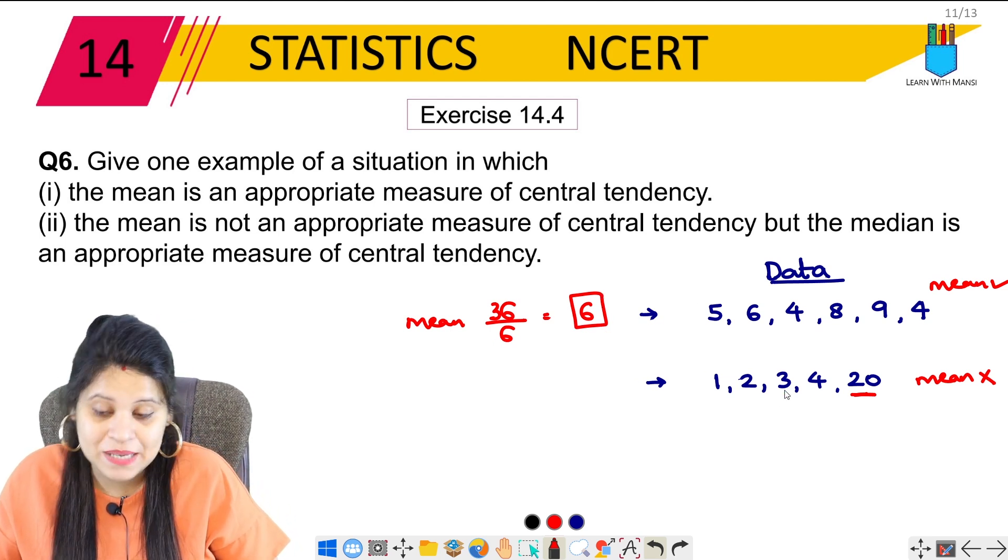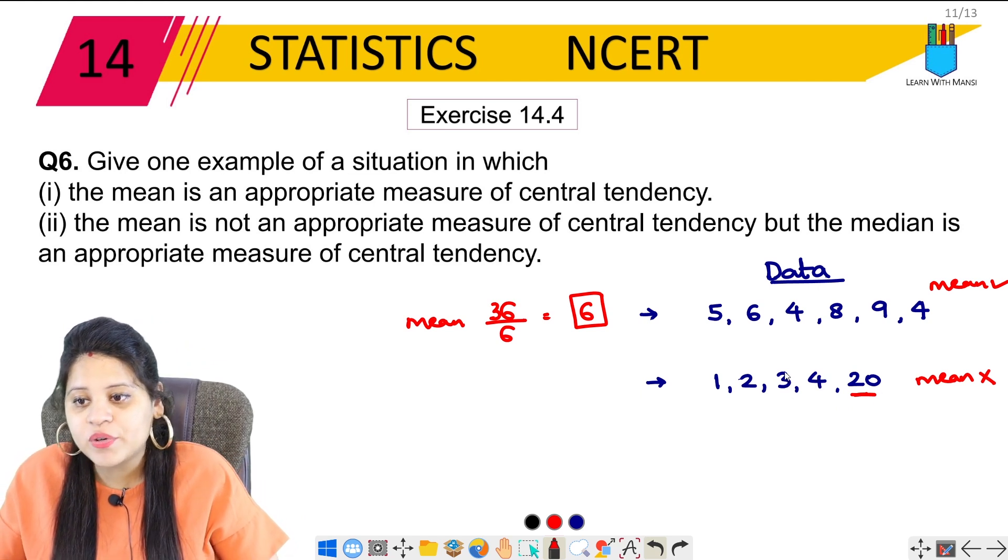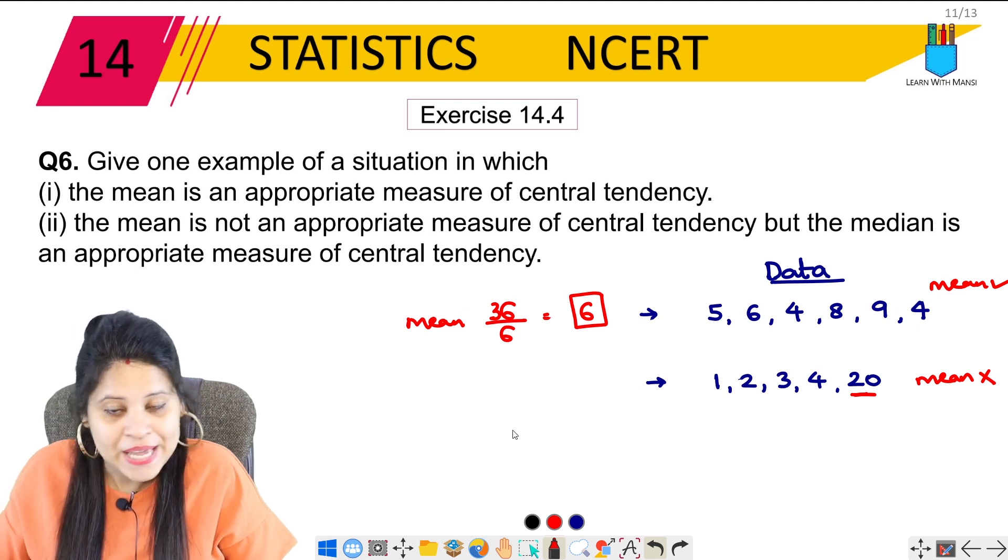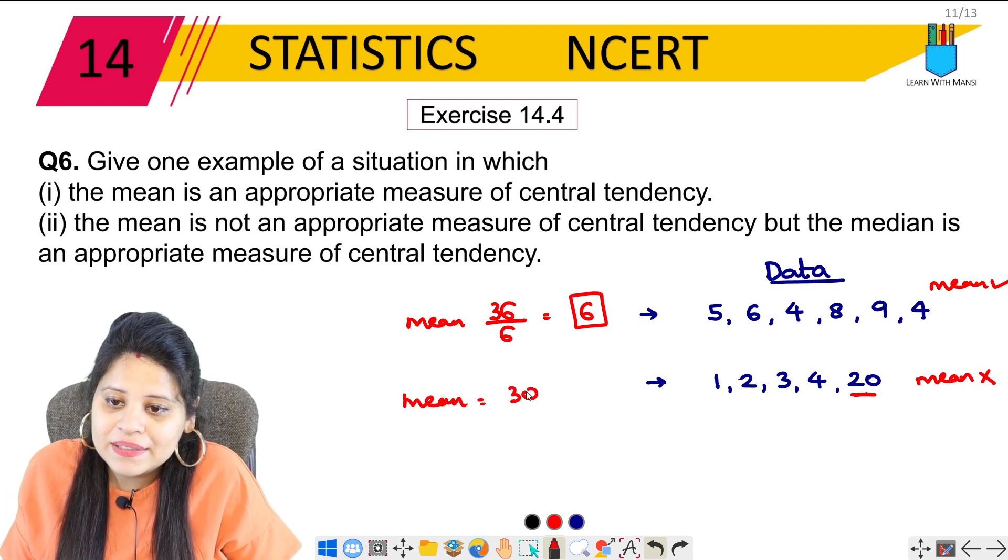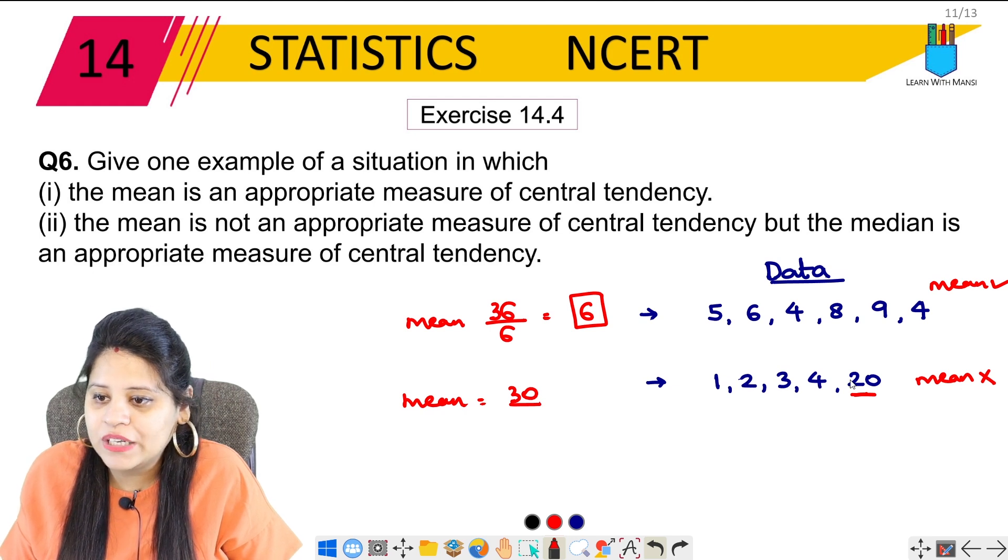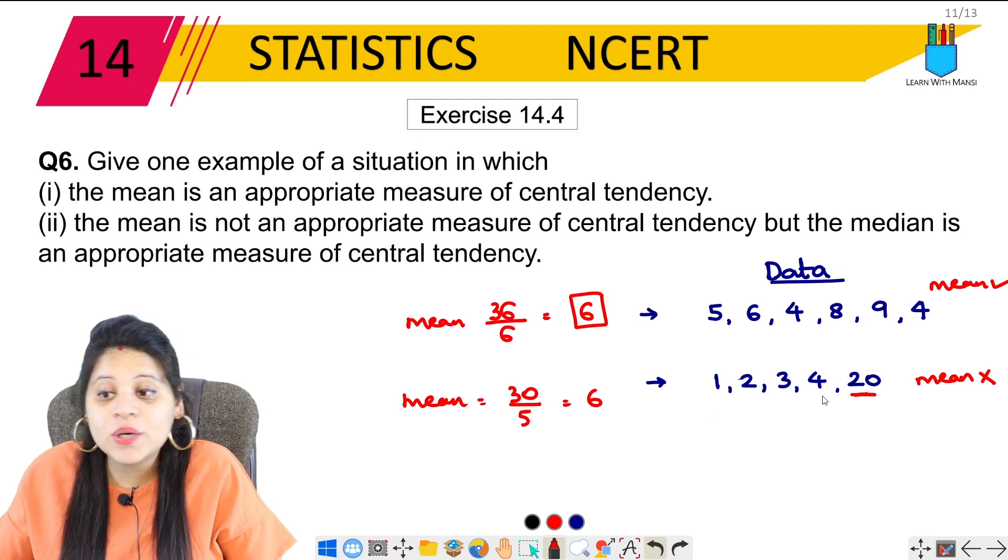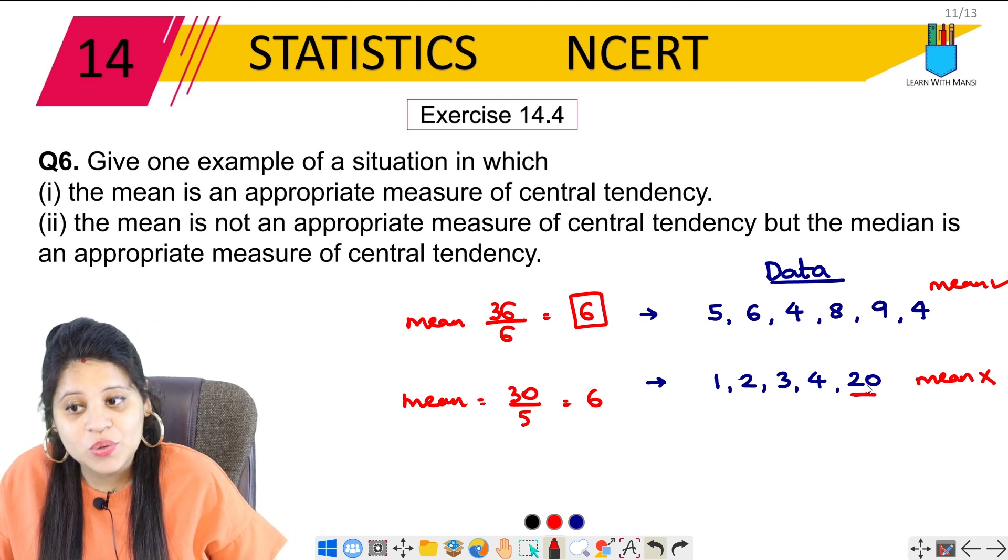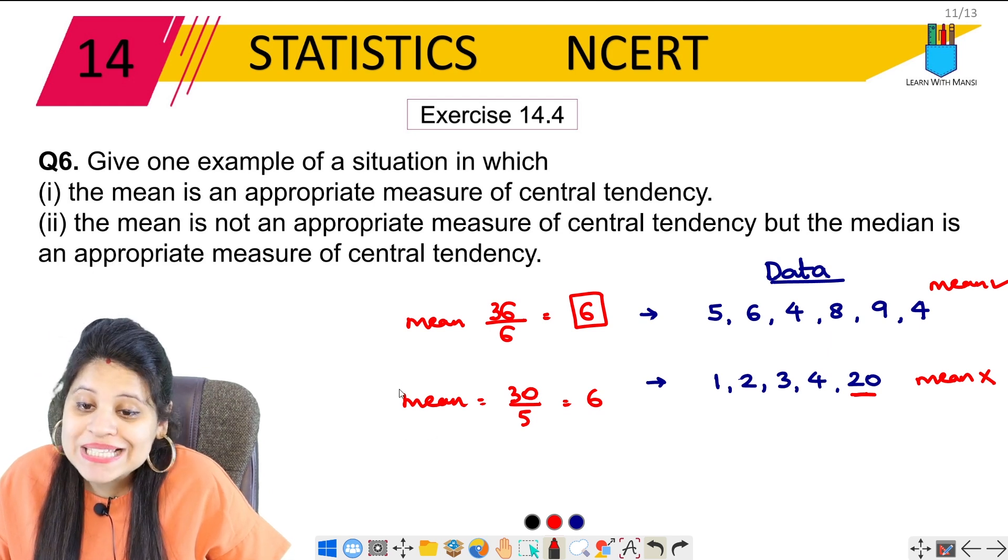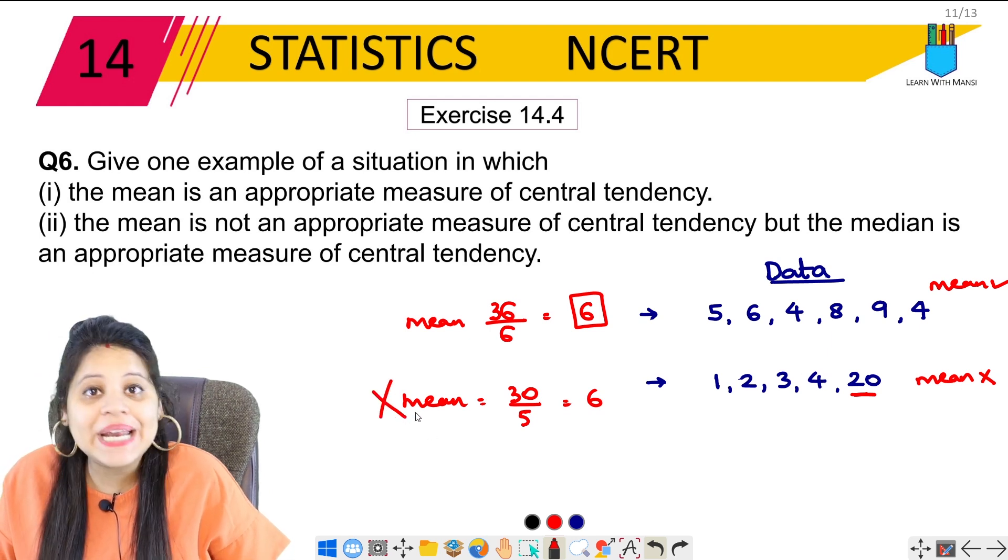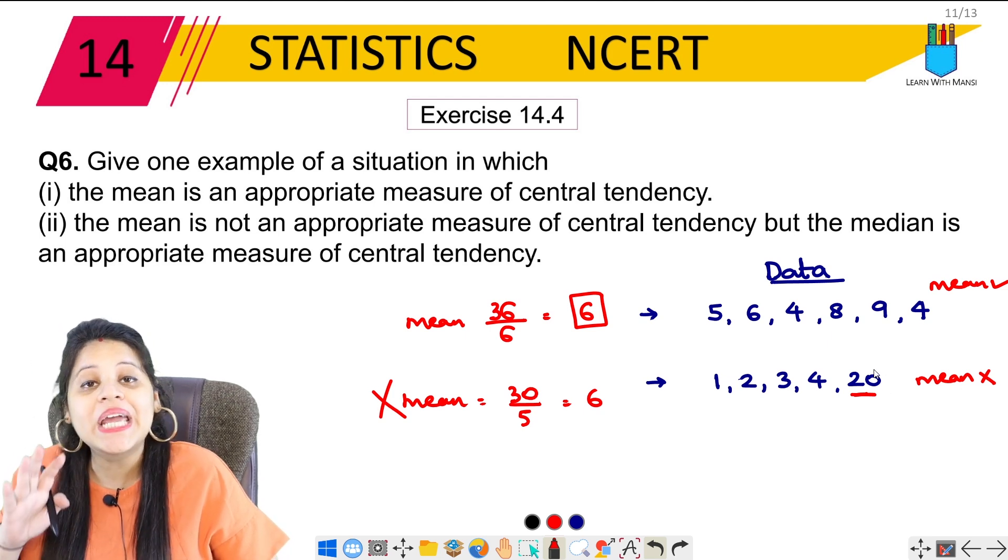But if I talk about this case, here it is 20, 24, 25, 26, 27, 30. The mean will be 30 upon 5, which is 6. If I look at the marks of the kids, there are 1 and 20, the rest are 1, 2, 3, 4. So in this case, the mean is not appropriate because one number is so big which will affect our whole mean.